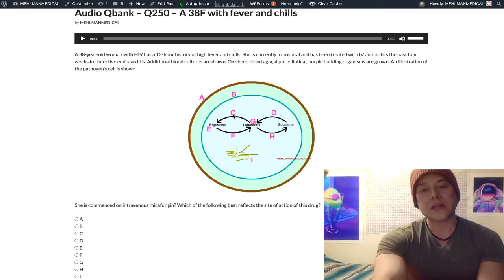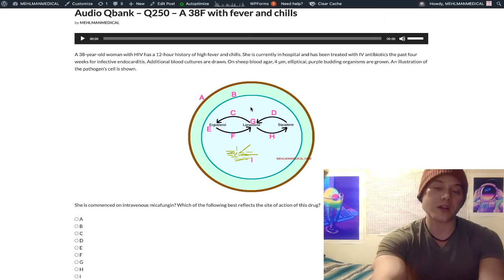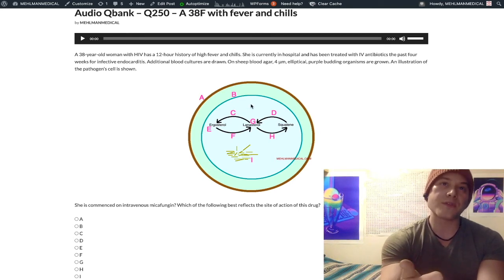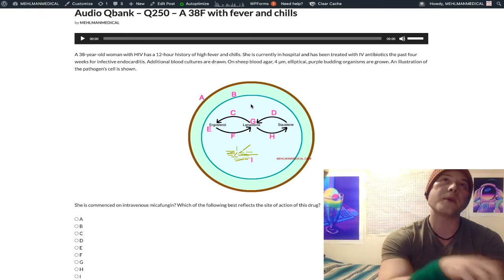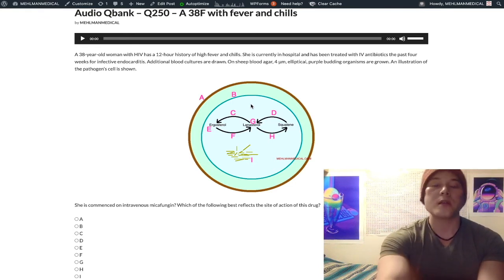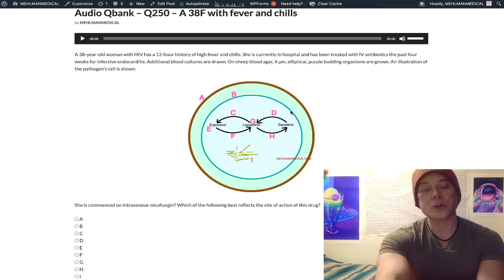Choice C refers to our azoles, like fluconazole, itraconazole, ketoconazole, voriconazole. So they inhibit 14-demethylase, which is the enzyme that converts lanosterol to ergosterol. Azoles inhibit P450. Well, ketoconazole classically inhibits P450. Ketoconazole is also anti-androgenic. It can inhibit an enzyme called desmolase. And they're also, the azoles are classically hepatotoxic, same as terbinafine. So you check LFTs before commencing oral azoles.